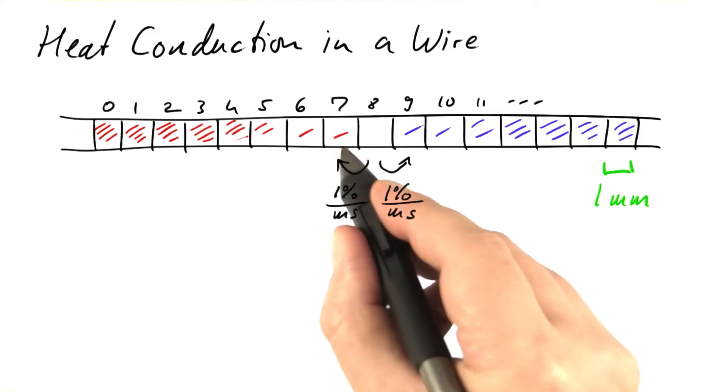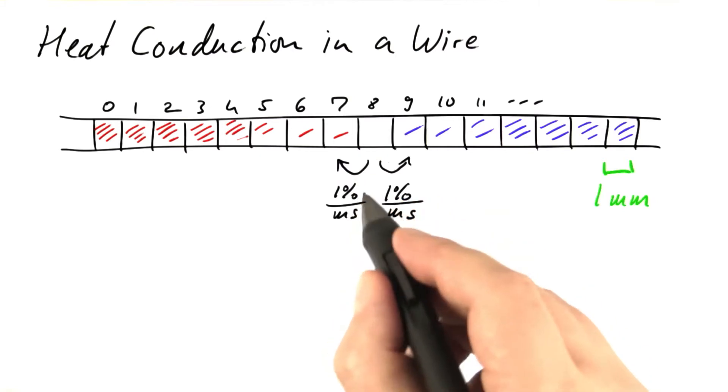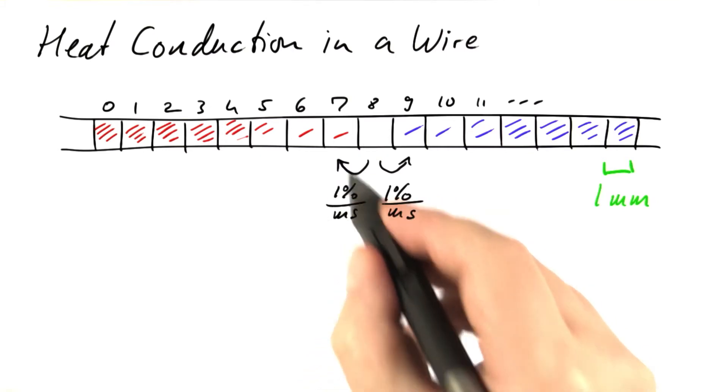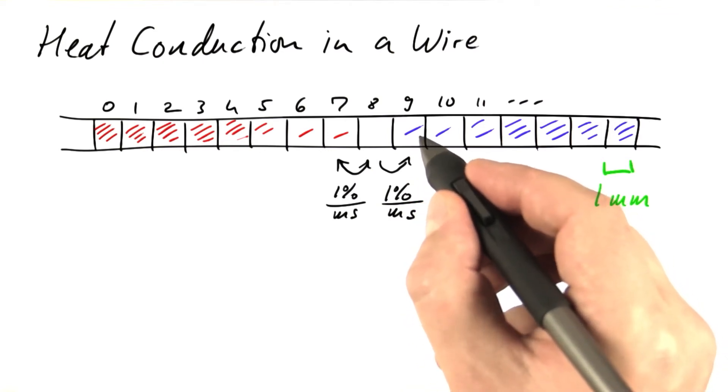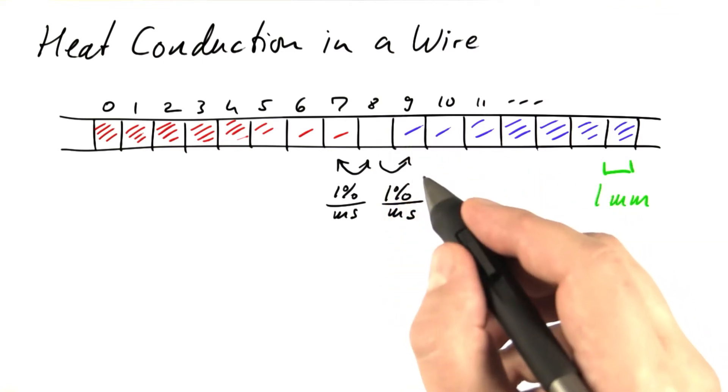But there will also be an energy flow from compartment number seven to number eight with the same percentage of the energy of number seven. And there will be an energy flow from compartment number nine to compartment number eight. Again, the same percentage, but of the energy content of compartment number nine.